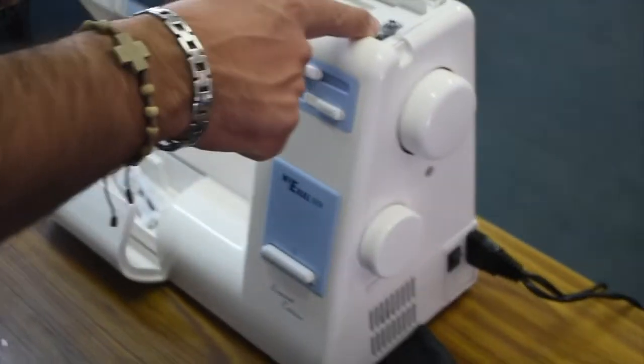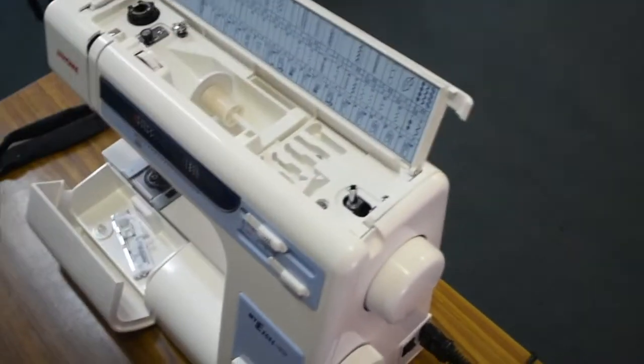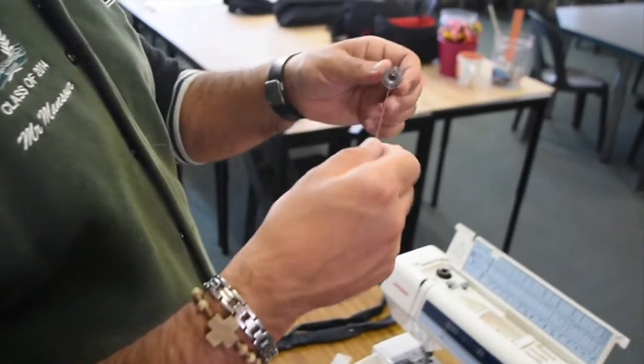Now what we do: we turn the power off, click the bobbin head back to the left position, and take out our bobbin.